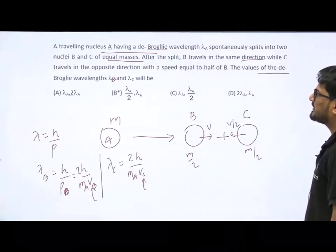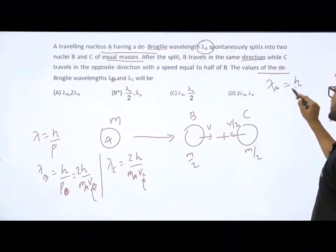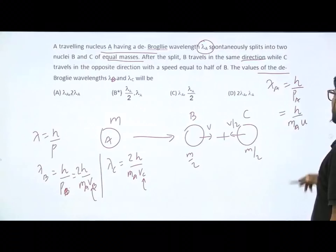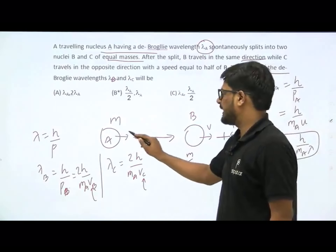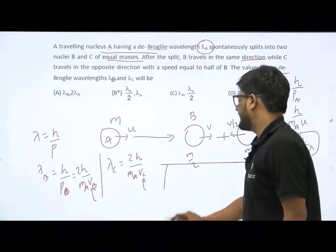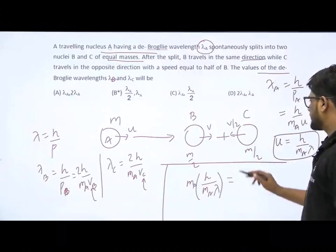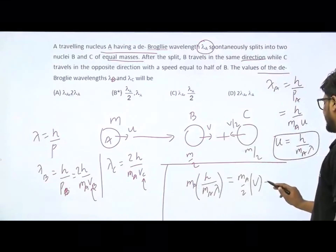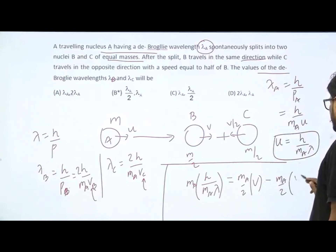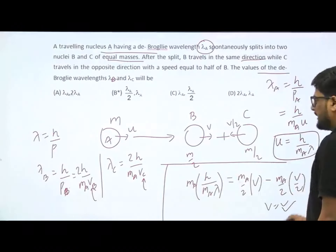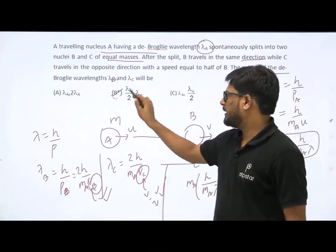Using conservation of linear momentum: M_A × U = (M_A/2) × V_B − (M_A/2) × (V_B/2), since C travels in the opposite direction. Solving gives V_B, and substituting back gives V_B/2 for V_C. Plugging these into the de Broglie expressions for lambda B and lambda C, the answer comes out to option B.